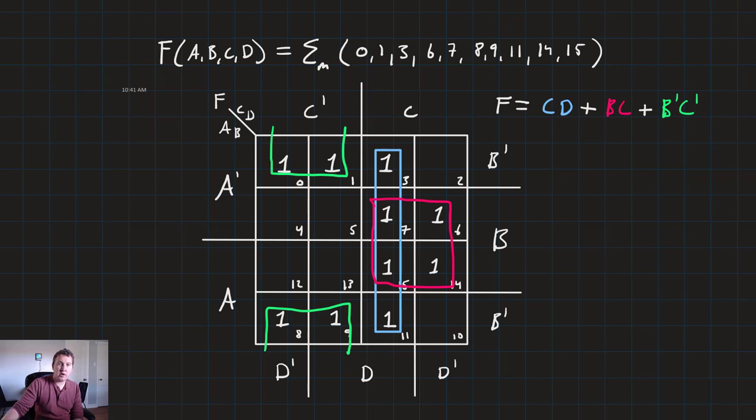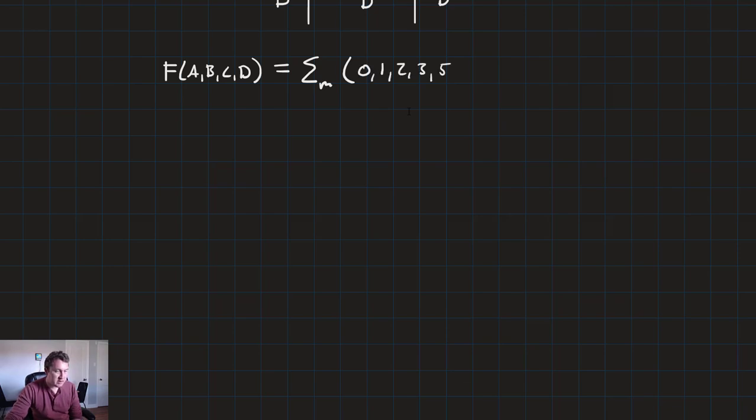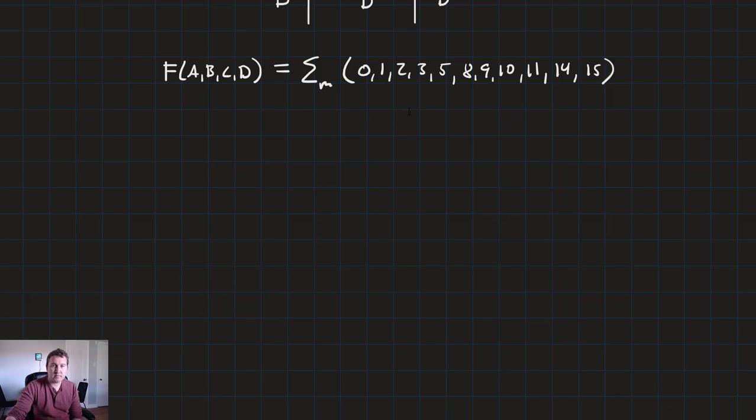So let's go ahead and do one more example. Let's say that we've got, again, F is a function of four variables, A, B, C, and D, and is equal to the sum of minterms 0, 1, 2, 3, 5, 8, 9, 10, 11, 14, and 15.